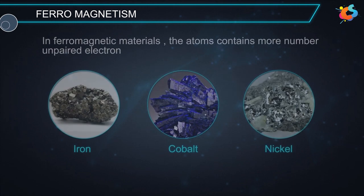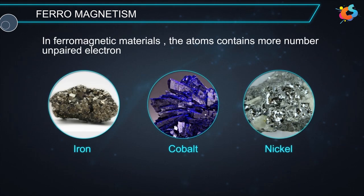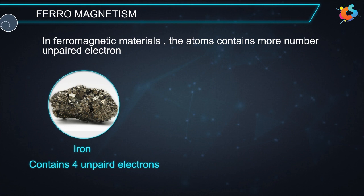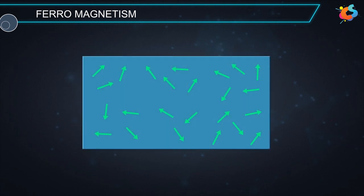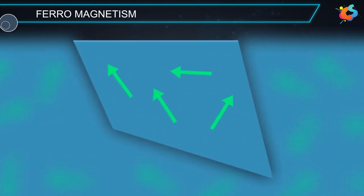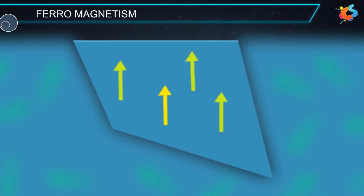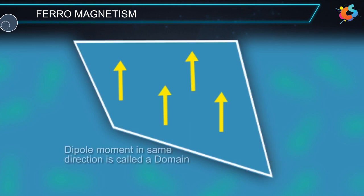Ferromagnetism. In ferromagnetic materials, the atoms contain a greater number of unpaired electrons. For example, iron contains 4 unpaired electrons. Due to this, the net dipole moment of an individual atom is greater compared to atoms in paramagnets. The dipole moment of one atom strongly interacts with the dipole moment of neighboring atoms and they align in a common direction. This small group of atoms with dipole moments in the same direction is called a domain.